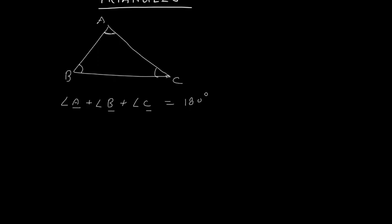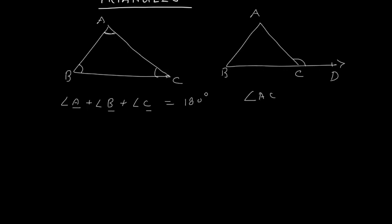One more property we have learned is the exterior angle of a triangle. To form an exterior angle, we extend any side. When I extend side BC, I get angle ACD. This angle is called the exterior angle of triangle ABC. This exterior angle ACD equals the sum of angle BAC plus angle ABC — that is, the exterior angle equals the sum of the opposite interior angles.